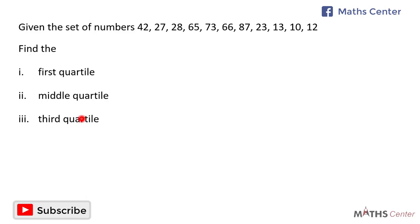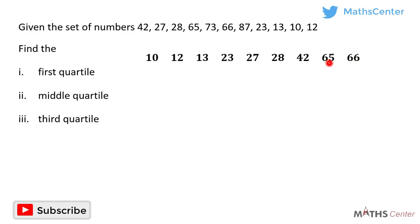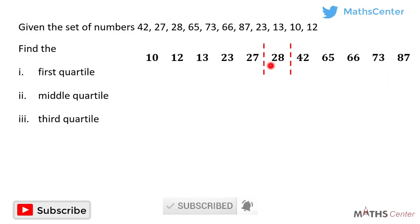The first thing we have to do is to arrange the numbers in ascending order of magnitude, that is from the smallest to the highest. The smallest number is 10, followed by 12, 13, 23, 27, 28, 42, 65, 66, 73 and 87. We have 11 numbers in total. When we divide this set into two equal parts, we have 5 on the left and 5 on the right, and the middle number is 28. So the middle quartile or the median is 28.